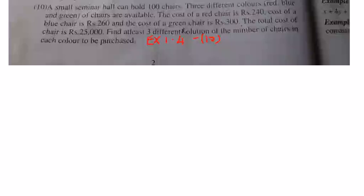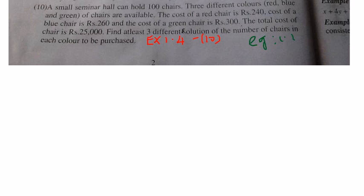This is exercise 1.4, tenth sum, similar to example 1.19. Let's start with the sum. A seminar hall can hold 100 chairs and there are 3 different kinds of chairs - red chair, blue chair, and green chair. The immediate assumption you can make is let x be the number of red chairs, y be the number of blue chairs, and z be the number of green chairs.